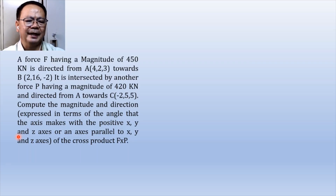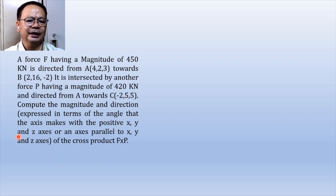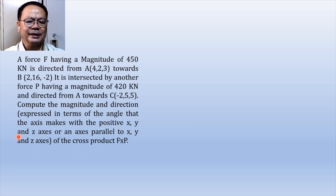Okay guys, please join me in our discussion so that we shall be able to follow how the cross product can be used in dealing with problems. Here is the problem: A force F having a magnitude of 450 kN is directed from A at (4, 2, 3) towards B at (2, 16, -2). It is intersected by another force P having a magnitude of 420 kN and directed from A towards C at (-2, 5, 5). Compute the magnitude and direction expressed in terms of the angle that the axis makes with the positive x, y, and z axis of the cross product P cross F.